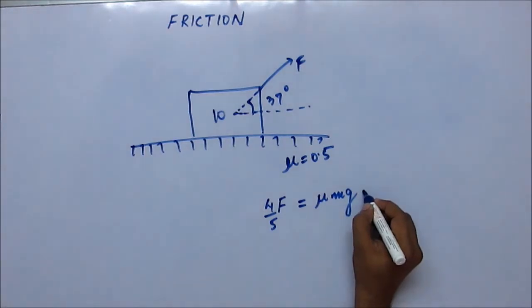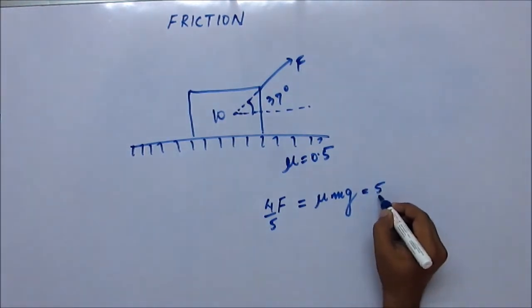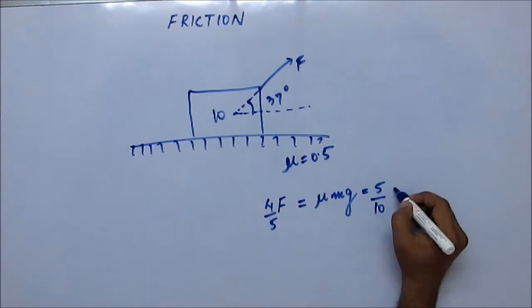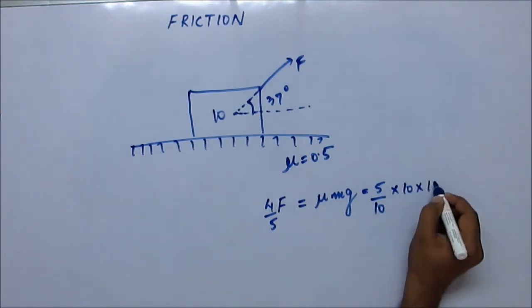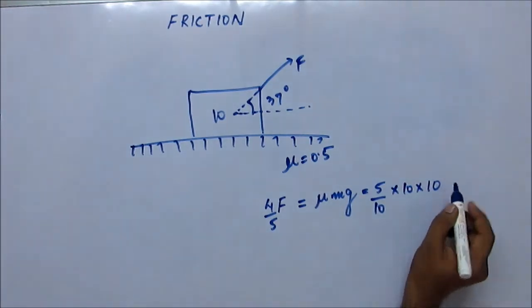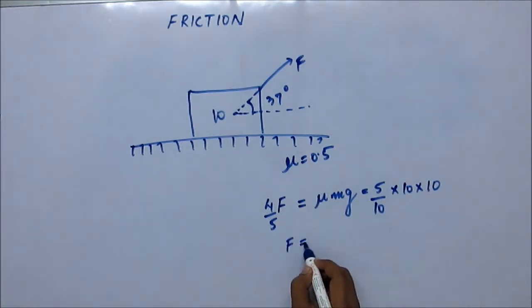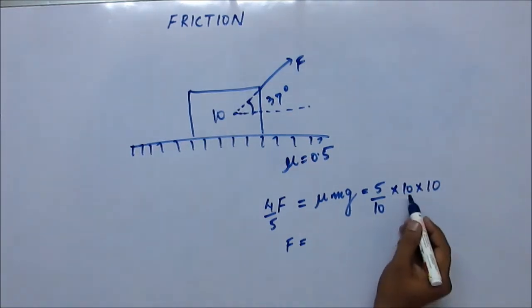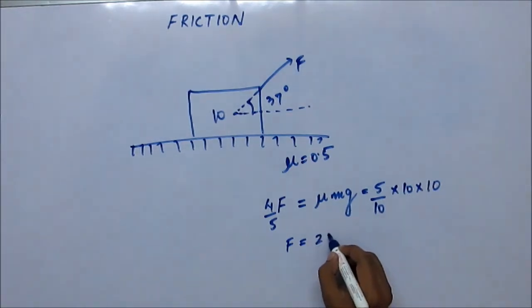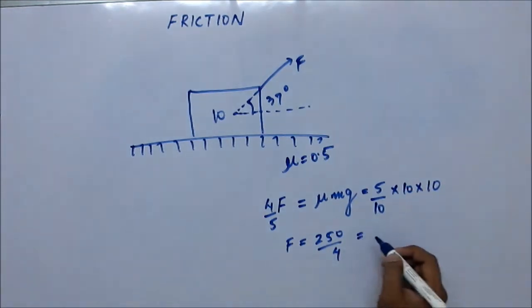Okay, so from here you can see mu is 5/10, mass is given as 10, and let's take g conveniently to be 10. So from here the minimum force required to drag the block would come out as 50 into 5, 250 upon 4. This would come out as 62.5 newtons.